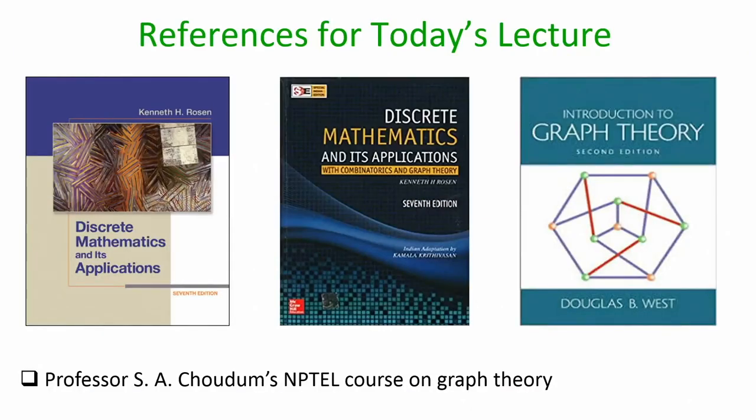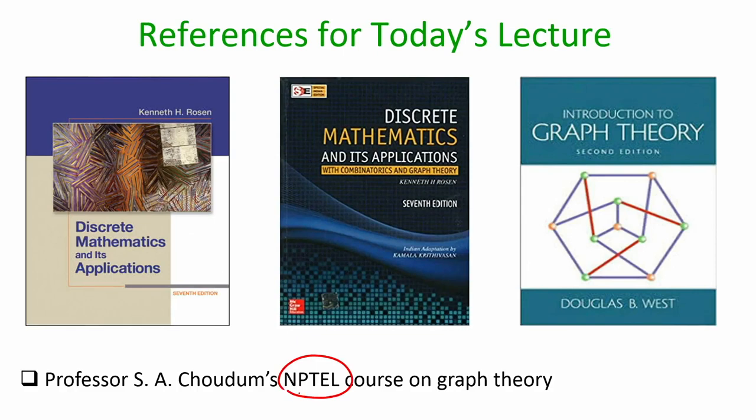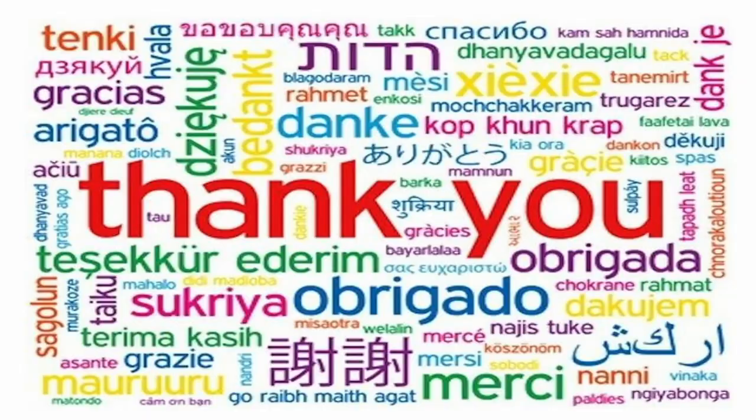That brings us to the end of this lecture. These are the references used; some notes from Professor Chauhan's course on graph theory were also used especially for the proof of correctness of Fleury's algorithm. To summarize: in this lecture we saw the definitions of Euler circuit and Euler path and proved the necessary and sufficient conditions for the existence of Euler circuits and Euler paths in a graph. Thank you.